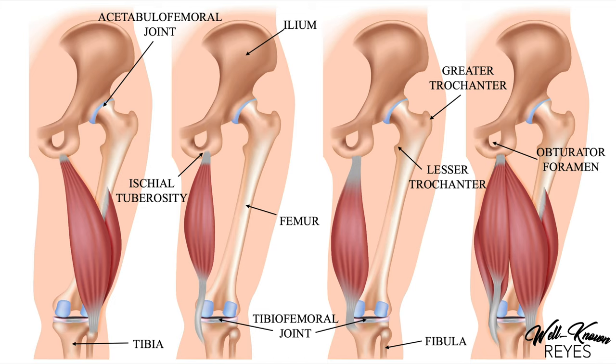First, we have the ileum, which is part of the pelvis bone. We have the femur, we have the tibia, and then we have the fibula.